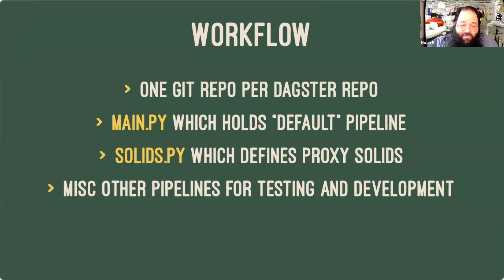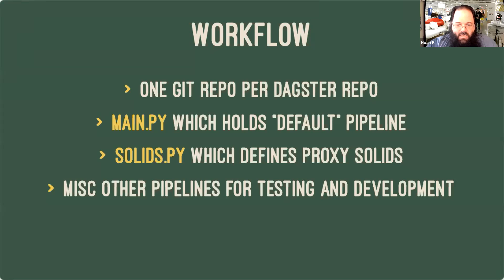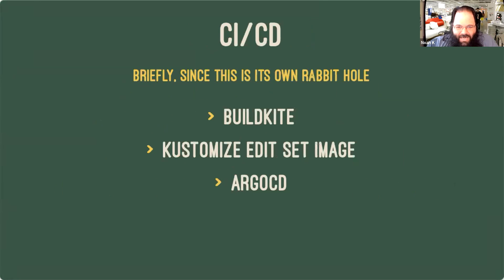We use the Dagster GraphQL API to integrate into our backend APIs for things like launching new executions via one of the GraphQL mutations, or discovering which pipelines exist for admin UI purposes. As we roll out this workflow to more internal projects, the goal is for the teams that currently own the JSON-based DAG definitions to take over writing Dagster pipelines instead. They're very excited about that — as soon as I let them, they're ready for it.